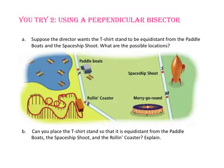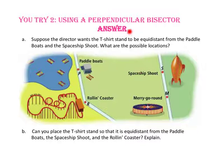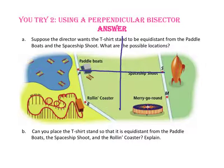Pause the video and do you try number 2. Suppose the director wants the t-shirt stand to be equidistant from the paddle boats and the spaceship chute — what are the possible locations? Any point on the perpendicular bisector of the segment will be equidistant to its endpoints. Drawing the segment between points P and S, then drawing the perpendicular bisector of segment PS, the t-shirt stand can be anywhere along this line and still be equidistant to the paddle boats and the spaceship chute.